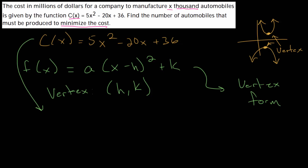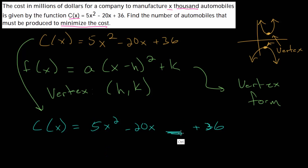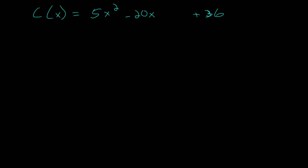To convert this cost function to its vertex form, we need to complete the square. We start by isolating the variable terms and putting the constant term out. So we have c of x is 5x squared minus 20x, and we add 36 to that. The general idea is that we're going to add some number so that we can rewrite this expression as some binomial squared, to transform it to vertex form.